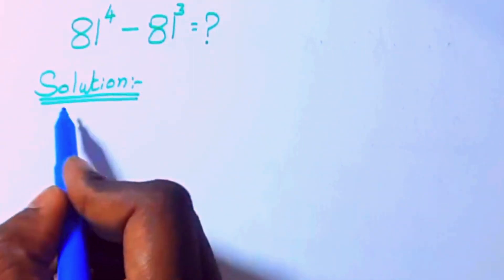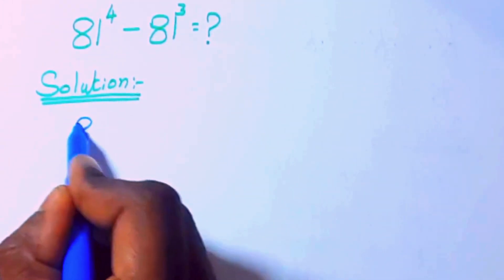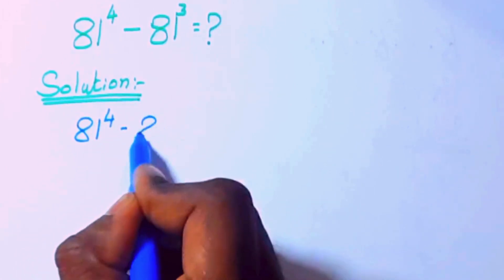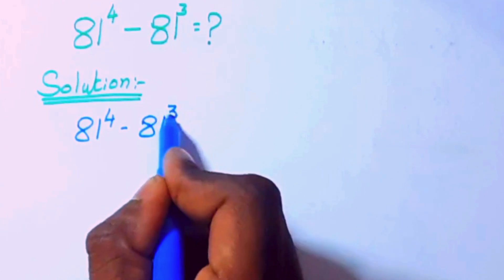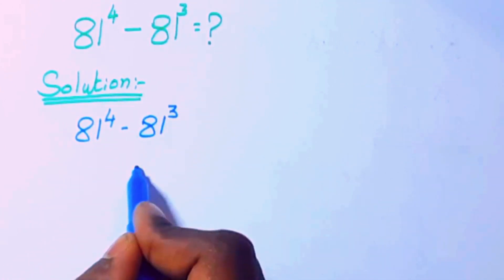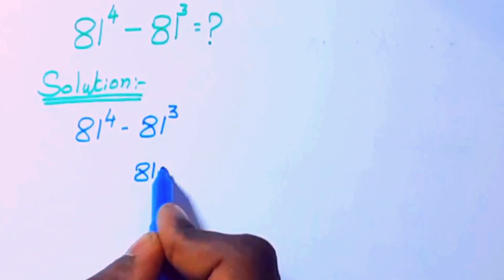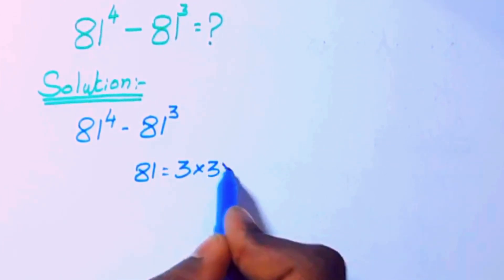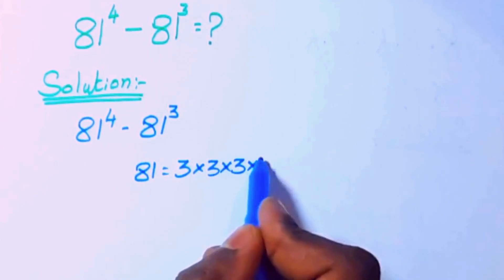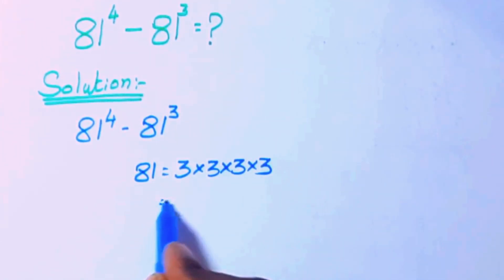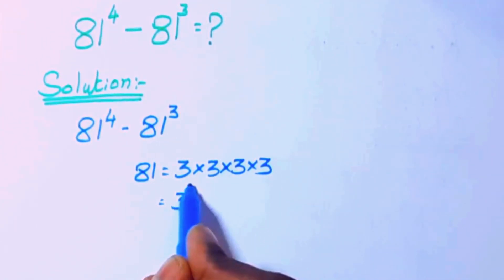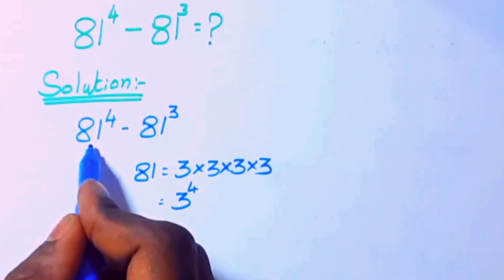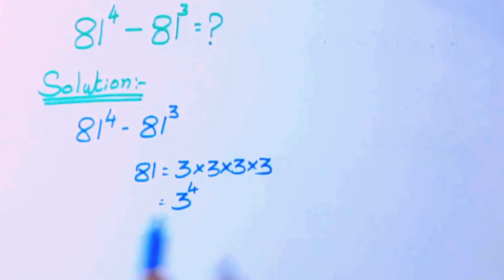Today we are going to solve this problem: 81 power 4 minus 81 power 3. Now this 81 can be written as 3 times 3 times 3 times 3, which is nothing but 3 power 4. So we can replace this 81 with 3 power 4.